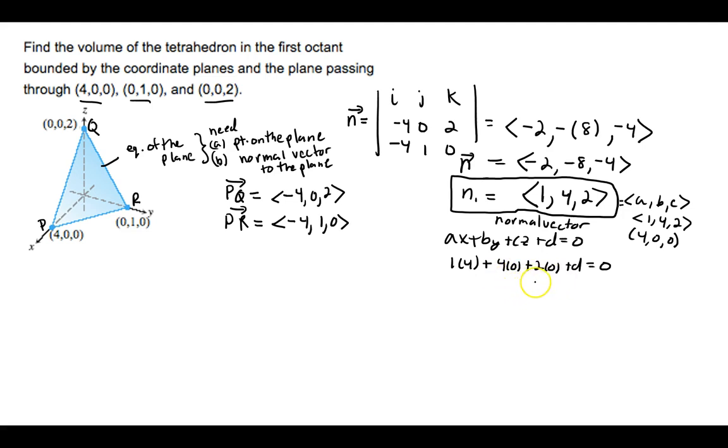What we get is that D is negative 4. And so the equation of the plane is X plus 4Y plus 2Z minus 4 equals 0. A little more work than it should have been, but we have it.